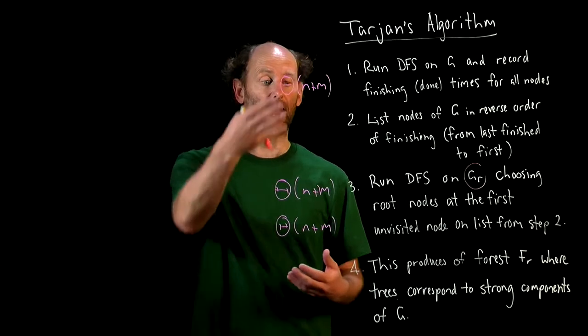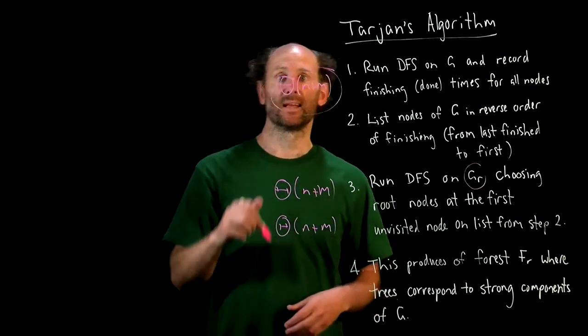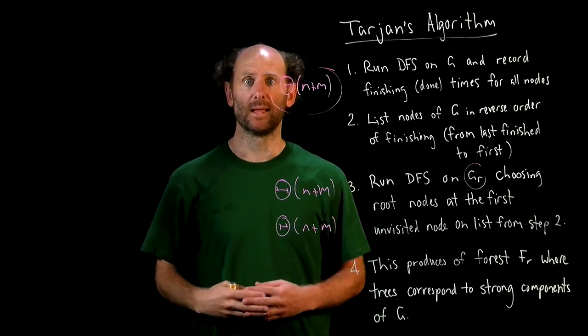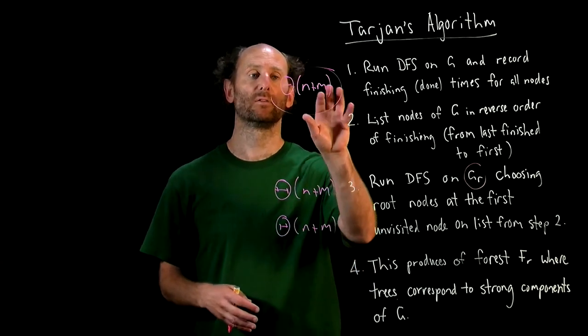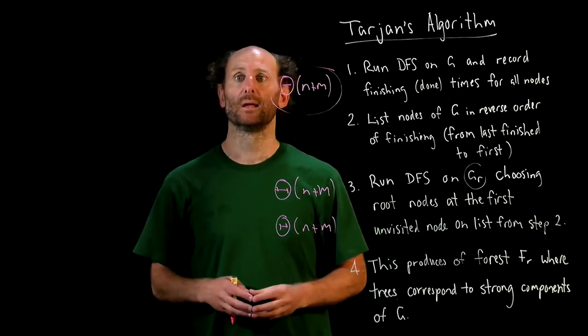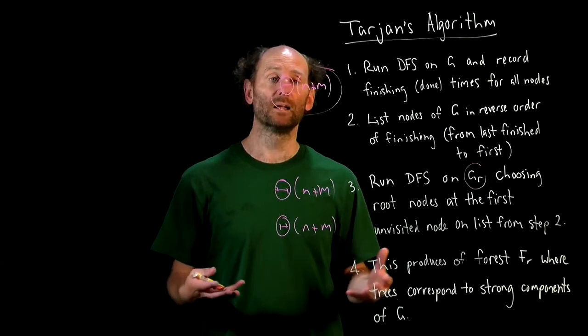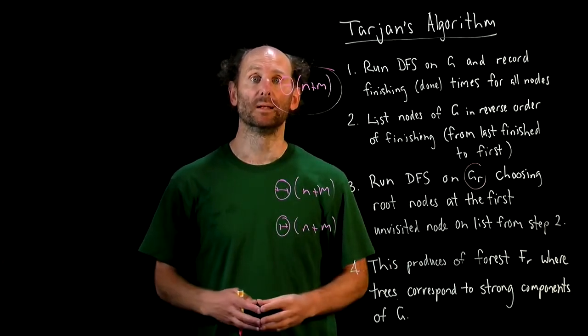and running DFS again is just theta N plus M. We're just adding these three things together, so overall, we once again just get a linear time algorithm, big theta N plus M. So although the problem of finding the strong components of a digraph seems much more tricky than finding the components of an undirected graph, it turns out they can both be solved in linear time.